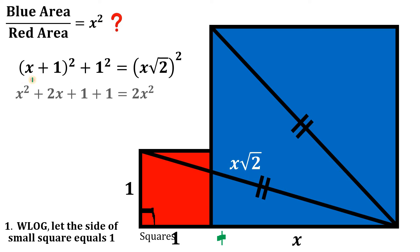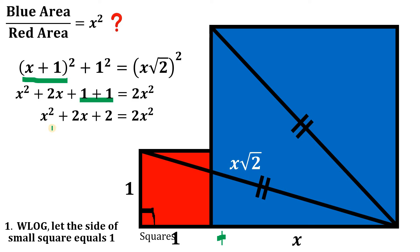Applying the Pythagorean theorem: (x + 1) squared plus one squared equals (x times square root of two) squared. Expanding: x squared plus 2x plus one, plus one, equals 2x squared. Combining like terms and equating to zero gives us x squared minus 2x minus 2 equals zero.